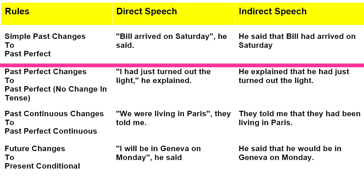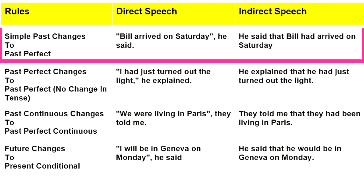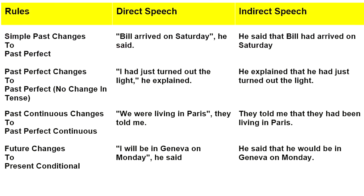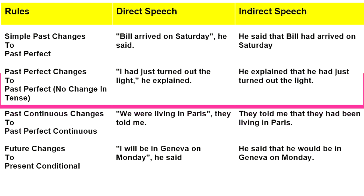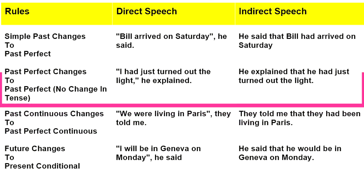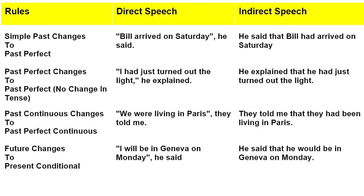Fifth rule: simple past changes to past perfect. For example: 'Bill arrived on Saturday,' he said. In indirect speech: he said that Bill had arrived on Saturday. Sixth rule: past perfect stays as past perfect — no change in tense. For example: 'I had just turned out the light,' he explained. In indirect speech: he explained that he had just turned out the light.